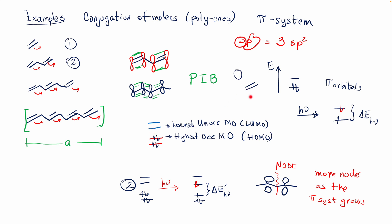For example, in the case where you have one double bond, you have one pi orbital that is bonding, one pi orbital that is anti-bonding, and you have two pi electrons. So they fill up the ground state — one energy level in your particle-in-a-box. If there is some excitation with the proper amount of energy, there's going to be a transition between n=1 and n=2, and that energy difference is the one being analyzed in UV spectroscopy, for example.